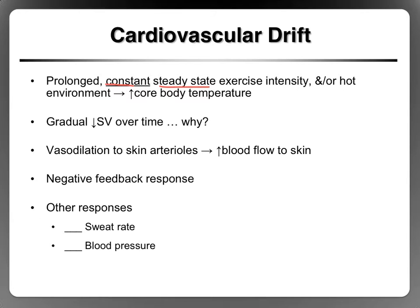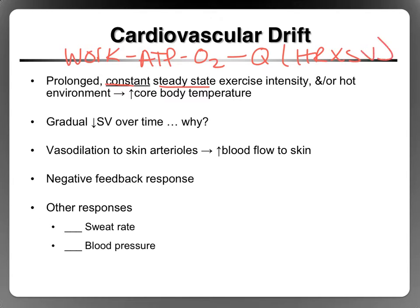Remember, we've already established that the amount of work you do determines the amount of ATP you need, which determines the amount of oxygen you need, which determines the amount of cardiac output you need. Cardiac output is heart rate times stroke volume. So at a constant intensity, the work stays the same, and so the need for cardiac output stays the same.